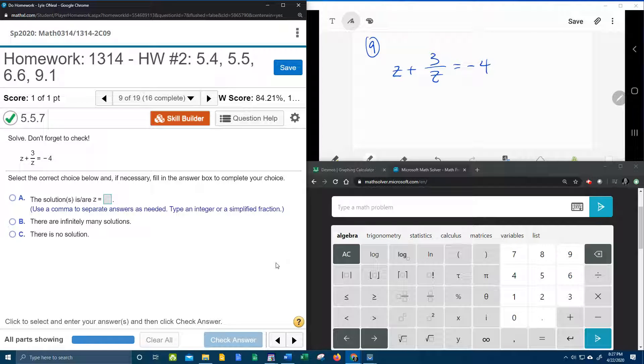Alright, here we go, number 9 from our college algebra homework number 2. In MyMathLab, we have another rational equation we need to solve. We know that this is a rational equation because we have a variable in the denominator, and so I've copied this down over here in my screen so we can work on it. Let's get started.